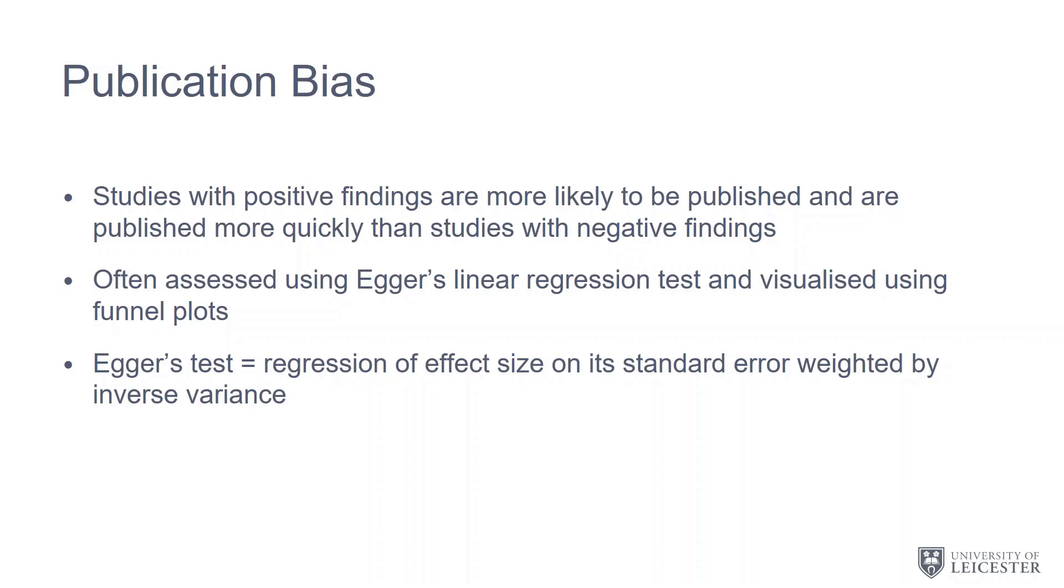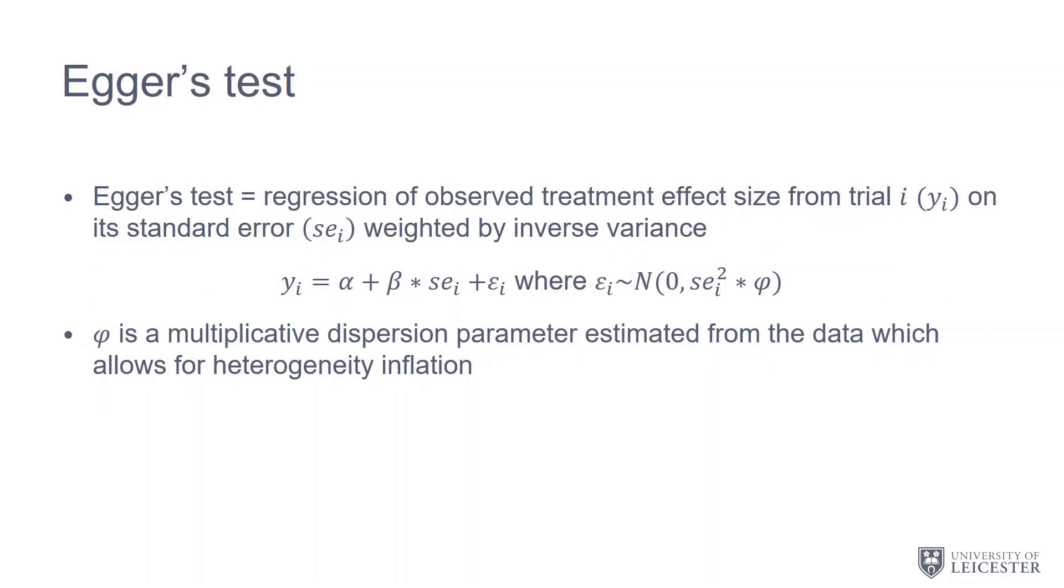We often assess publication bias using Egger's linear regression test, and we most often visualize the results of Egger's test using something called a funnel plot. For those who like equations, Egger's test is a regression of the observed treatment effect from a trial on its standard error, weighted by inverse variance.